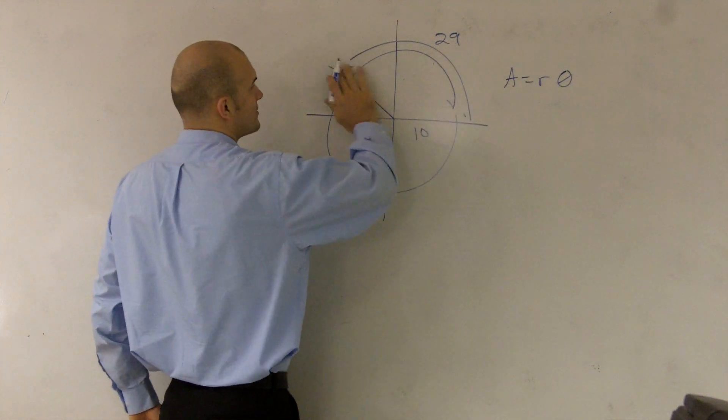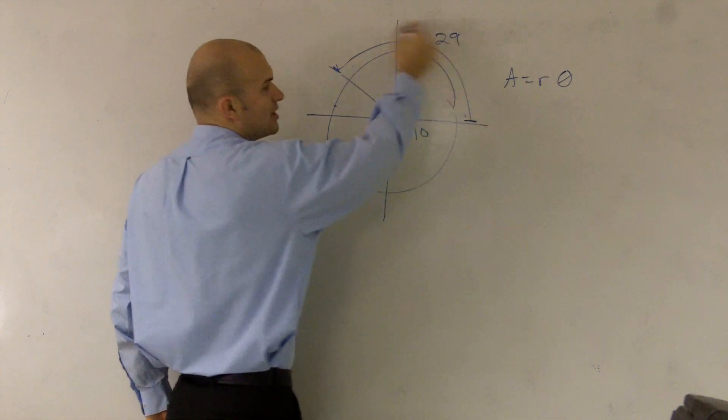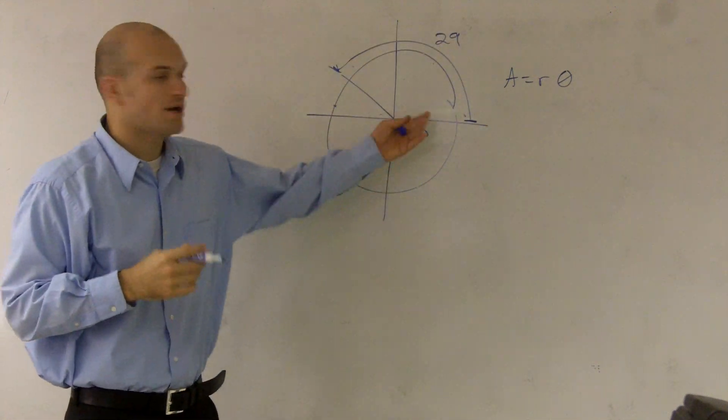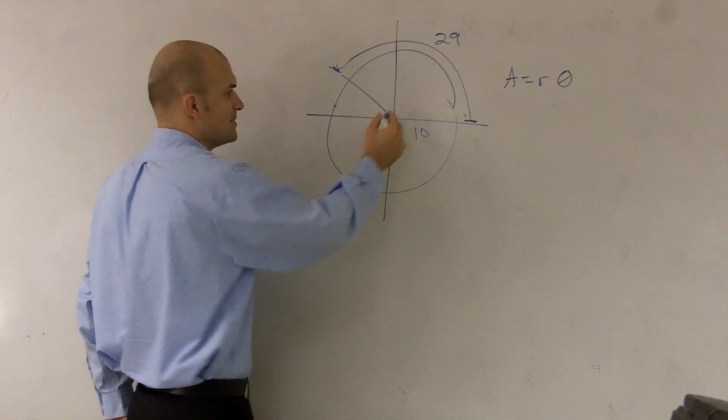So I say the arc length, from here to here, is 29 radians. What is going to be my theta? What is actually going to be this angle?